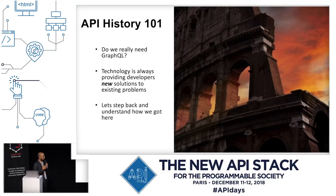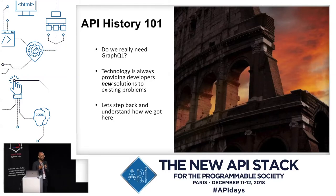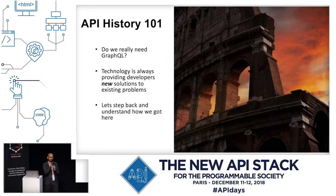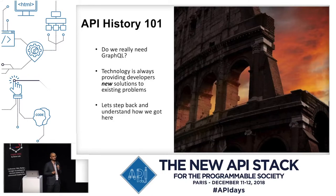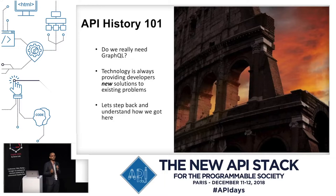Before I start talking about GraphQL, I wanted to step back and give you a little bit of a history lesson in how we got to GraphQL. When I look at technology, we're always coming up with new things and often solving the same problem in a different way. When I looked at GraphQL the first time, my first impression was: well, we already have REST. Do we really need something else like GraphQL?